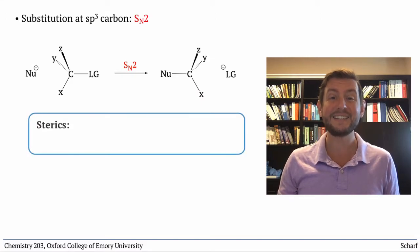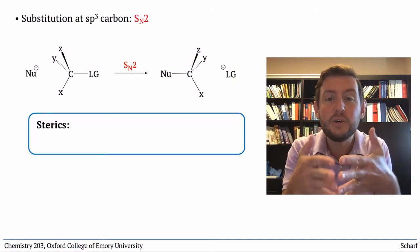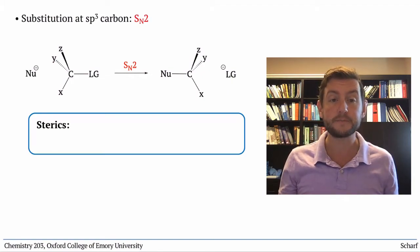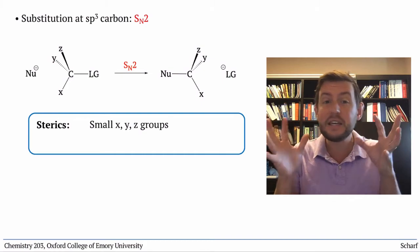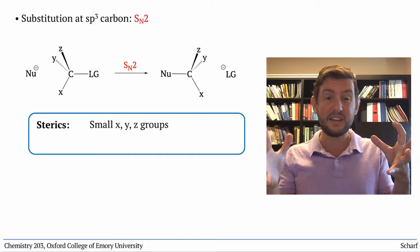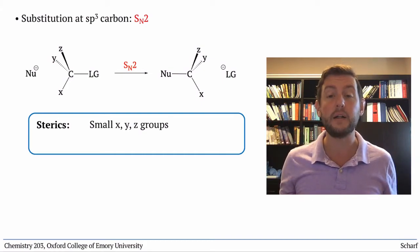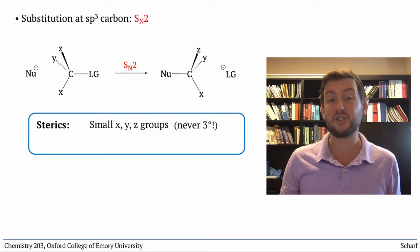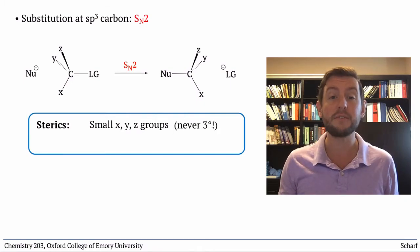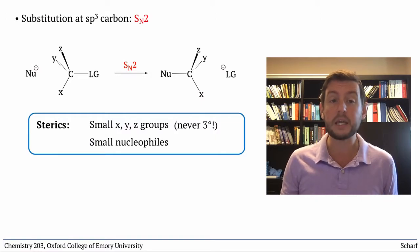First, sterics. The nucleophile has to be able to get to the empty sigma star orbital. So sterically encumbered halides don't undergo this reaction well. In fact, leaving groups that are tertiary almost never undergo this sort of substitution, nor do really bulky nucleophiles.